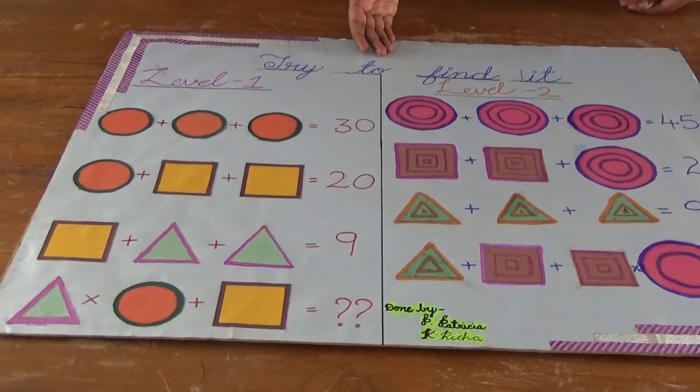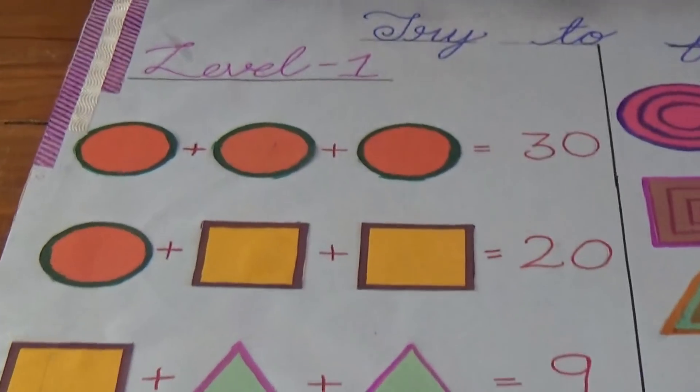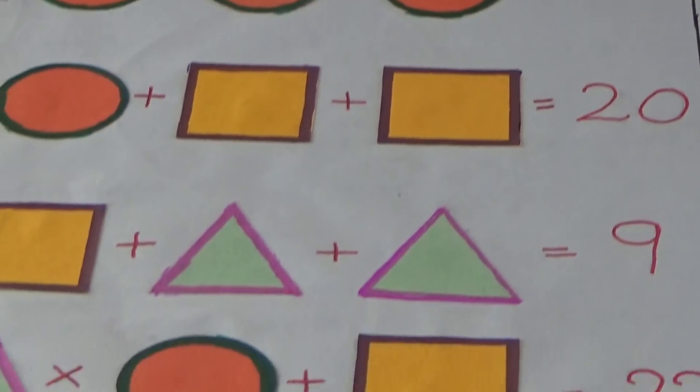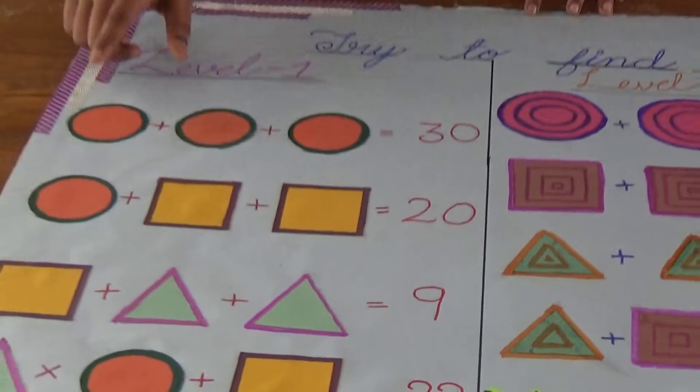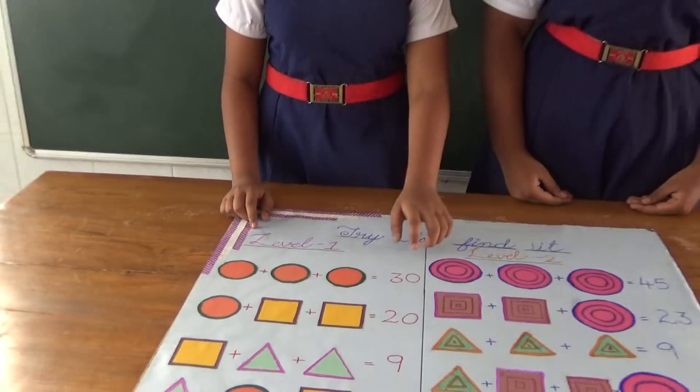We have divided the chart into two halves and named them Level 1 and Level 2. When you see Level 1, you can see the addition of 3 circles equals 30.